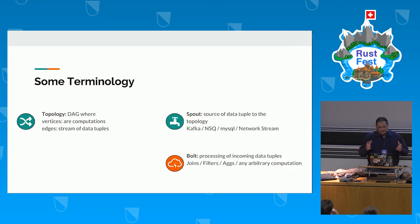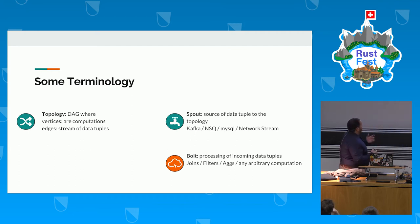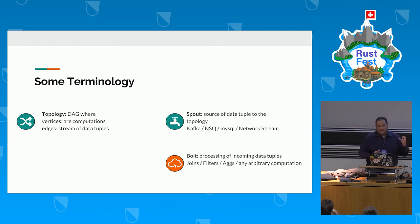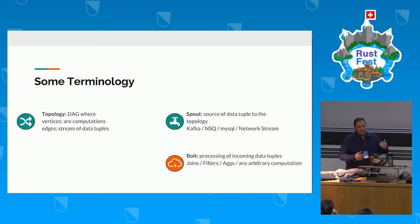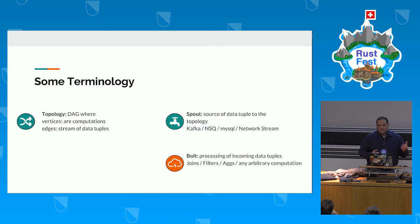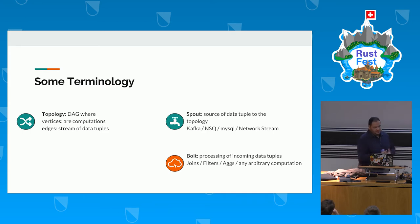You have this directed acyclic graph — in the terminology of Apache Storm it's called a topology — and it contains nodes of two kinds. One kind is called the spout, which is a source of data: a node that is reading data in a continuous fashion, such as reading from a queue like Kafka or NSQ, or even grabbing data from a network or a MySQL database. The other is a bolt — the node that is actually doing the computation. If you're computing some value, performing some arbitrary function, joins, or these types of operations, you write this in the form of a bolt.